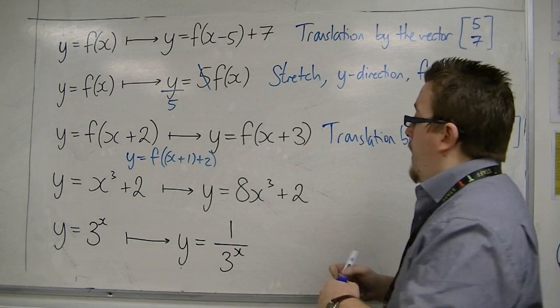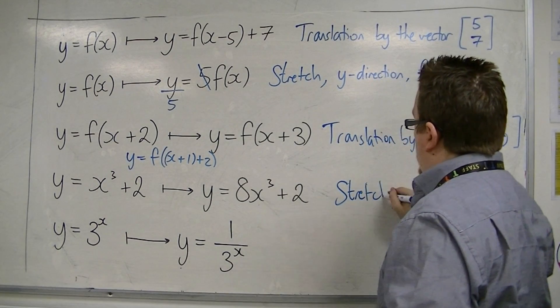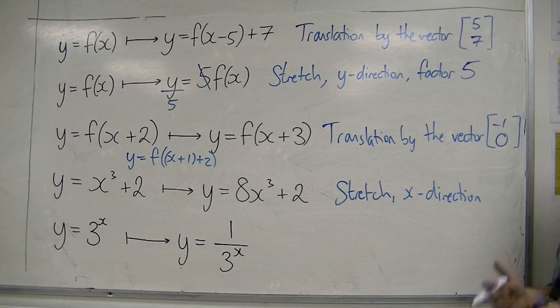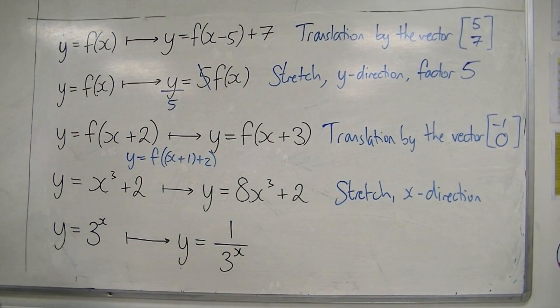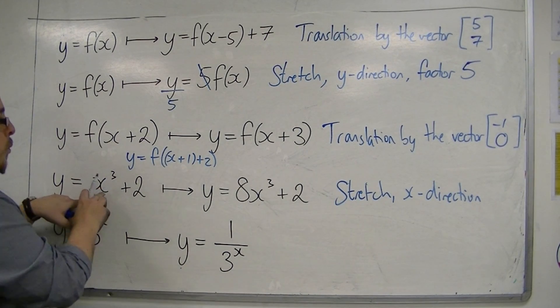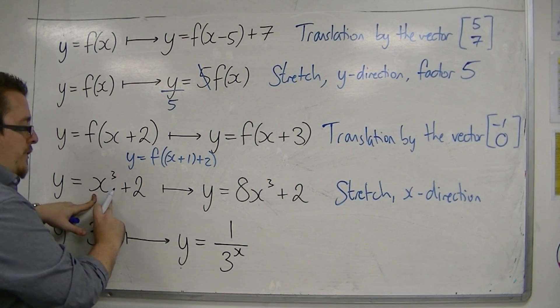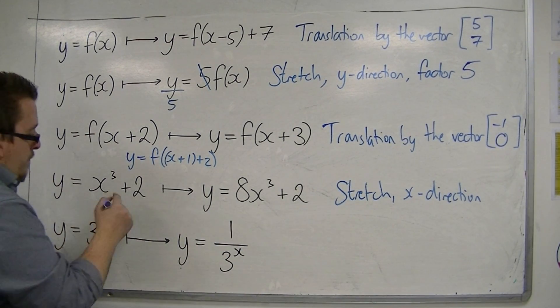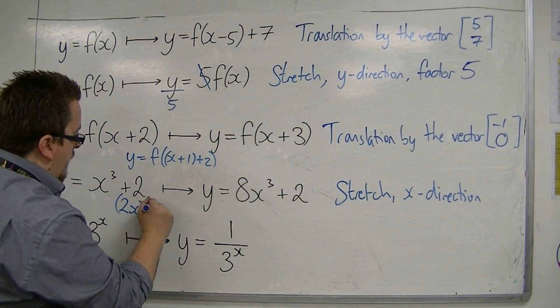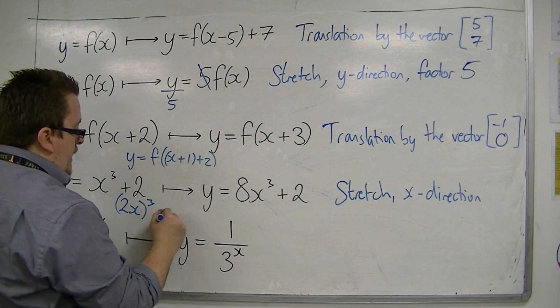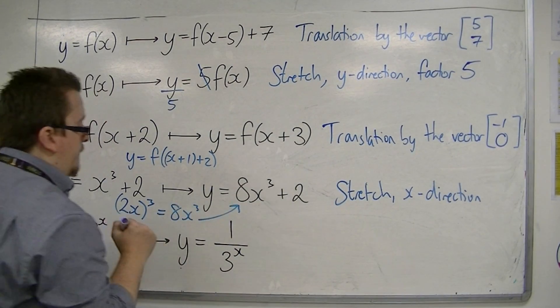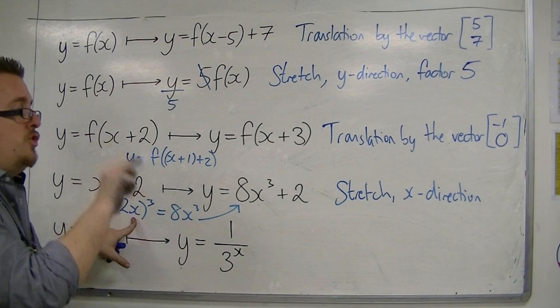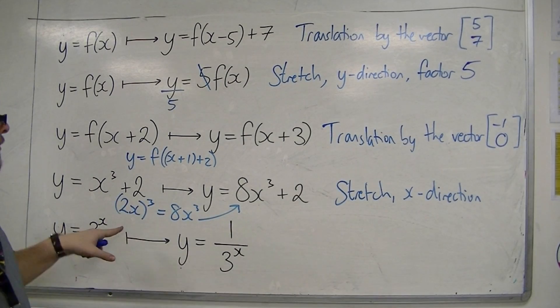So this must be a stretch in the x direction. Now I just need to work out what the factor would be. What would I need to replace the x with to make x cubed 8x cubed? If I replace the x with 2x, then I get 2x cubed, which is 8x cubed, which is what I want. So if I replace the x with 2x, then this is a stretch in the x direction by a factor of 1 half, because it's the reciprocal of 2.